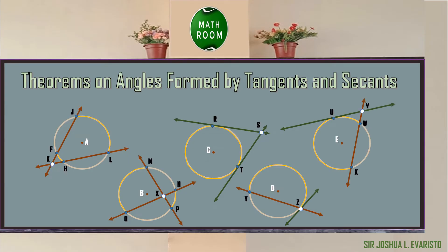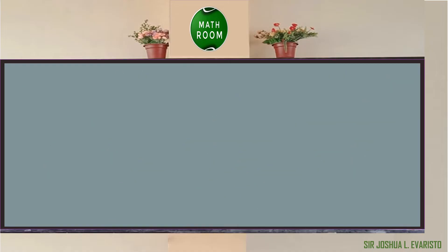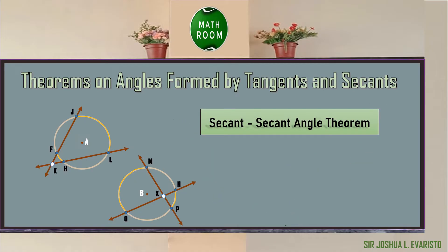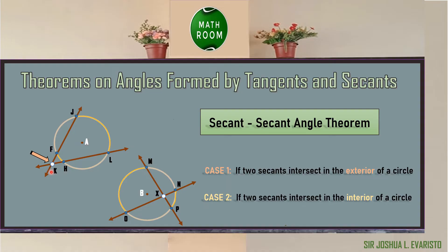We can now proceed to the different theorems on angles formed by tangents and secants. Theorem number one is the Secant-Secant Angle Theorem, which has two cases. Case one: if two secants intersect in the exterior of a circle — circle A is an example, where secant line KJA and line KL intersect at point K outside the circle. Case two: if two secants intersect in the interior of a circle — circle B is an example, where line MP and line ON intersect at point X inside the circle.